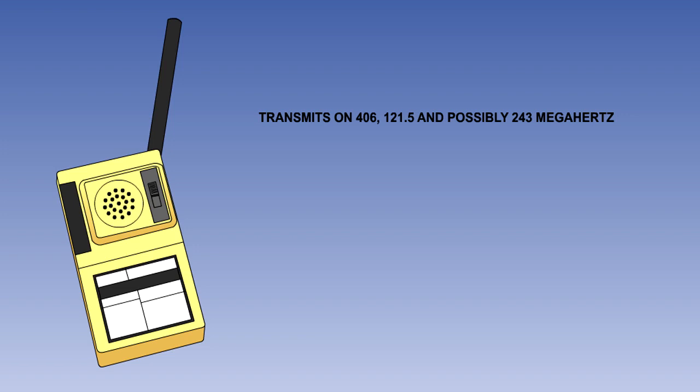When switched on, the PLB will transmit on the civil international aviation distress frequencies of 406 and 121.5 megahertz, and possibly on the military distress frequency of 243 megahertz. It may also have a speech transmission and reception facility on 121.5 megahertz. Many personal locator beacons also have the facility to transmit a global positioning system generated position, accurate to a few meters.